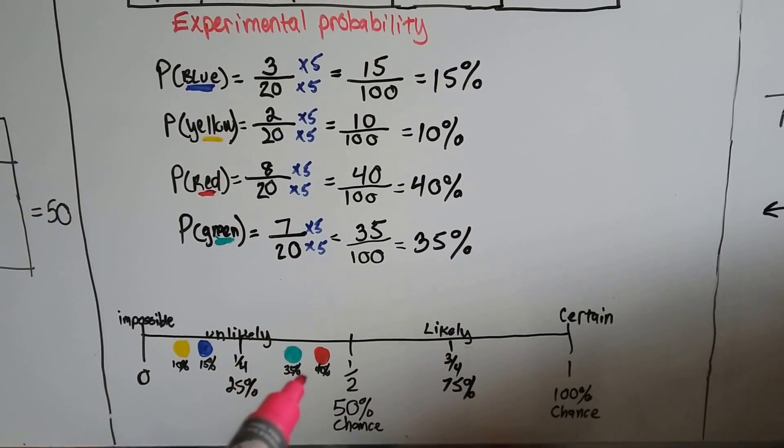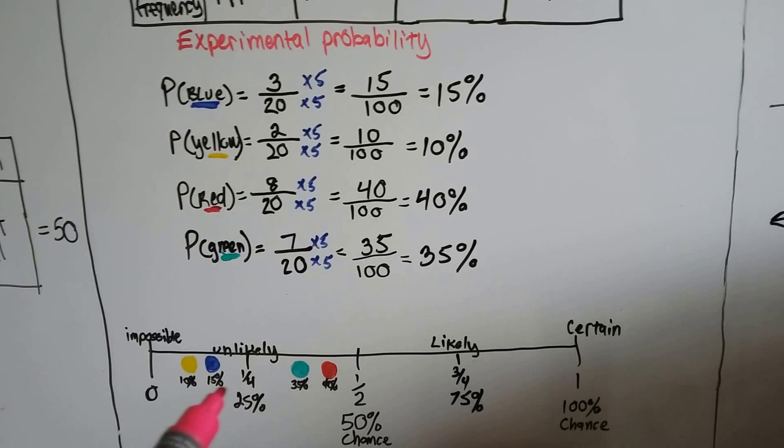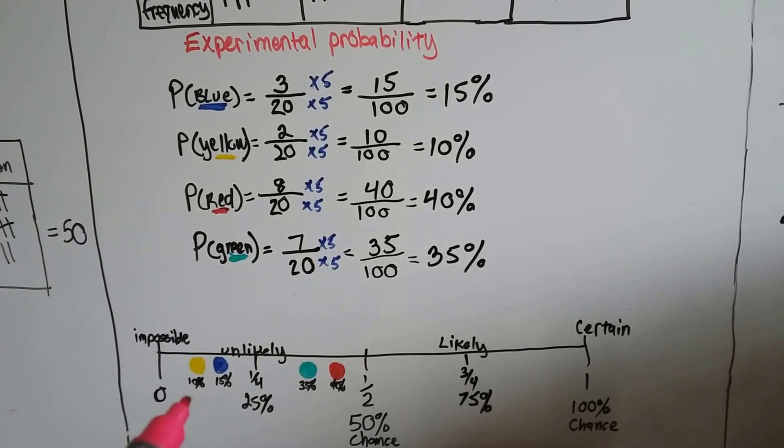When I did a number line, we saw that 40% of the time it landed on red, 35% of the time it was green, 15% was blue, and 10% was yellow.